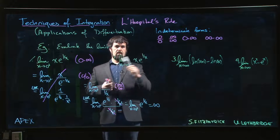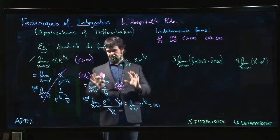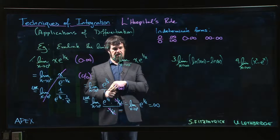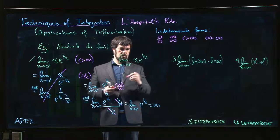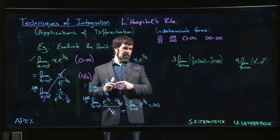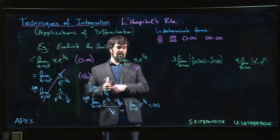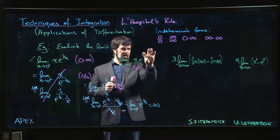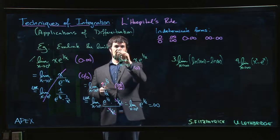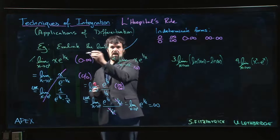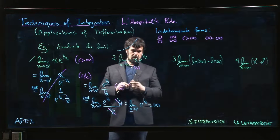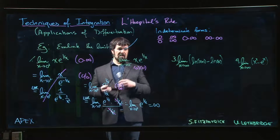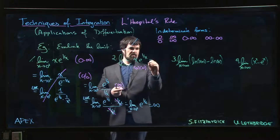What about the left-hand limit? If x is approaching 0 from the left, x is still going to 0, so that part is still going to 0. But what about e to the 1 over x? If x is approaching 0 from the left, x is negative, so 1 over x is approaching minus infinity. The exponential function approaching minus infinity goes to 0. So both factors go to 0 — this is not an indeterminate form, and there's no need for L'Hôpital's rule. This limit is simply 0.